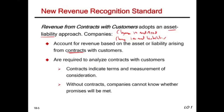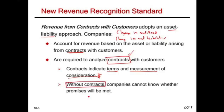The contract indicates the terms and measurement of consideration — the dollar amount and what we will be delivering. Without a contract, companies cannot know whether promises will be met, so in theory there should be no revenue. A contract can be oral, written, or implied, but if there is no contract, there is no revenue because the contract is the foundation. The contract identifies your rights and your obligations, and we assume the contract is enforceable.